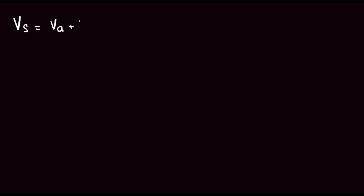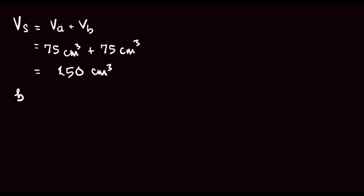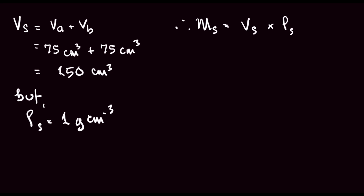Volume of solution Vs equals Va plus Vb, which is 75 cm³ plus 75 cm³, giving us 150 cm³. The density of solution is 1 gram per cm³. Therefore, mass of solution equals volume of solution times density of solution, which gives us 150 cm³ times 1 gram per cm³, so that equals 150 grams.